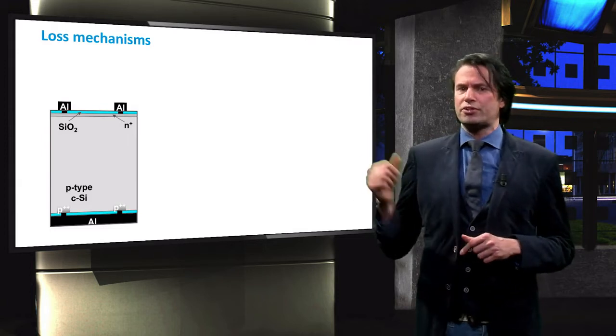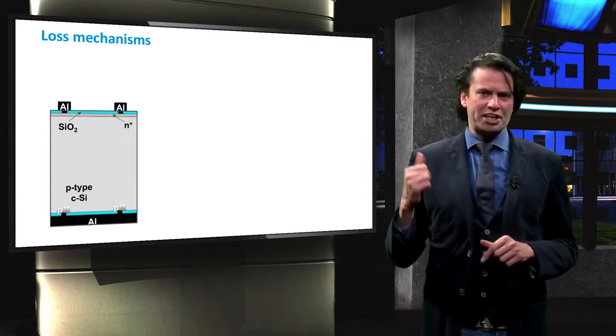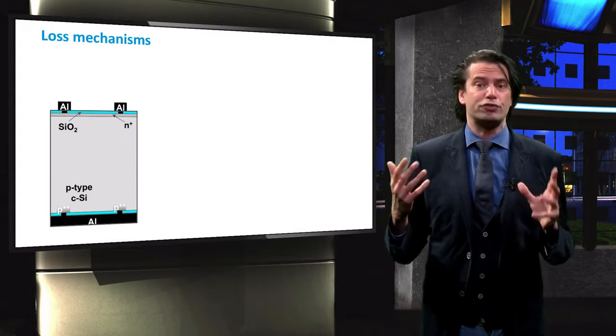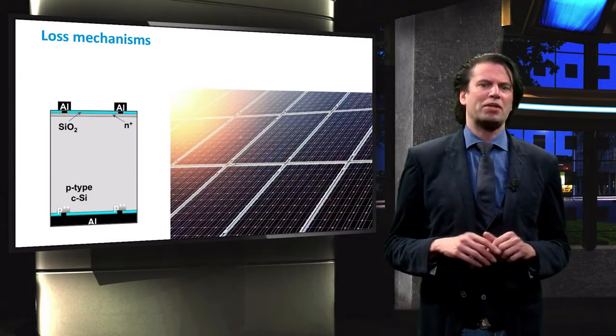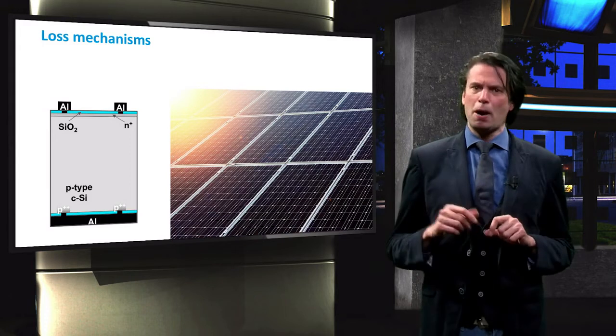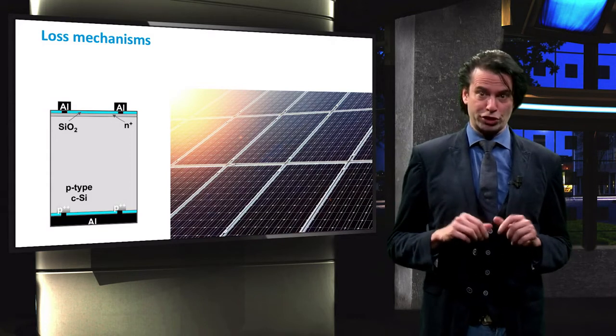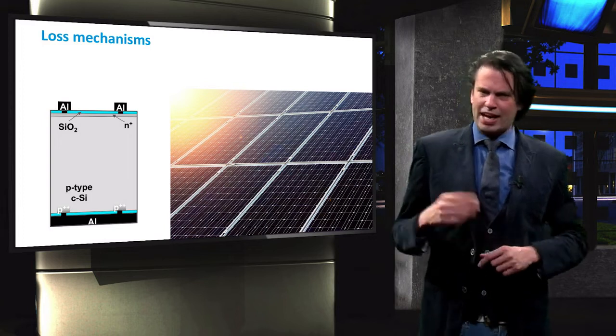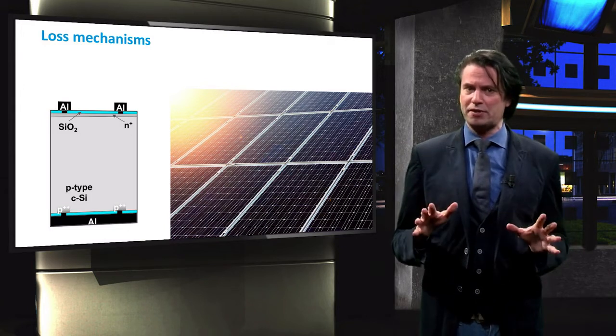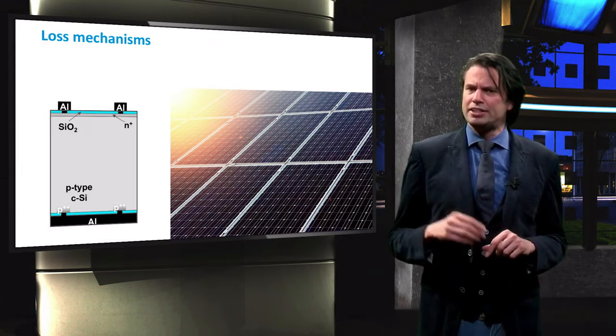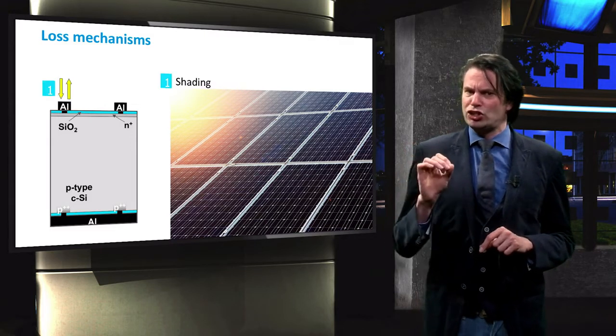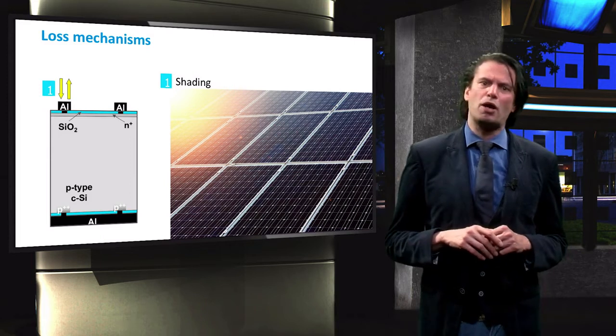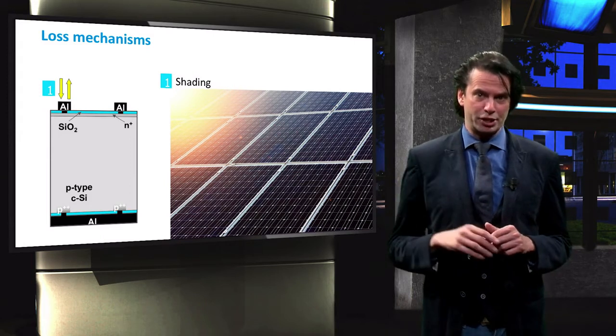We will use the standard crystalline silicon solar cells shown here to demonstrate each of the four main loss mechanisms. As we can see, part of the solar module surface is covered by a metal grid. As this metal grid is not transparent to the incident light, the area under the grid is shaded. These shading losses decrease the amount of sunlight reaching the absorber layer.